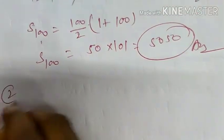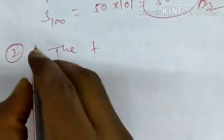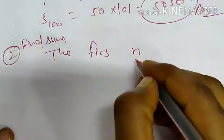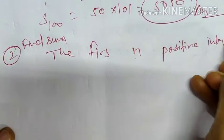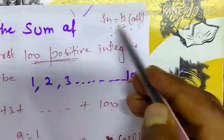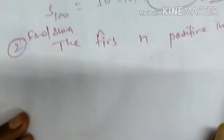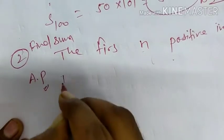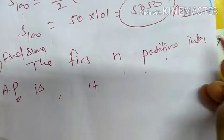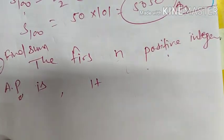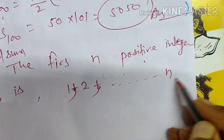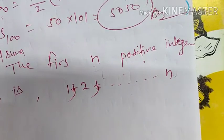Now one more question: find the sum of the first n positive integers. The AP will be 1 + 2 + 3 up to n, because the number of terms is n, so the last term will be n. From 1 to n, this is the AP.